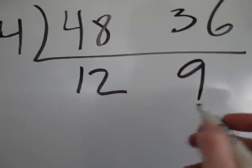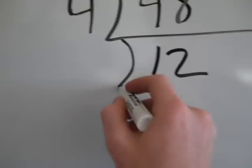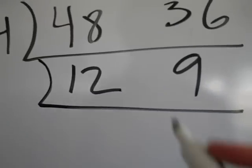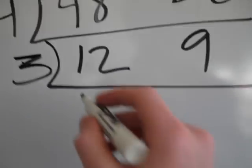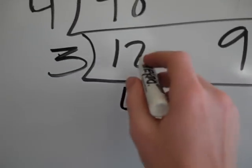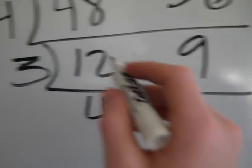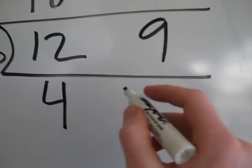Now I'm looking at 12 and 9, and I'm thinking about numbers that go into 12 and 9. 3 goes into both of these numbers. 3 goes into 12 four times, 12 divided by 3 is 4, and 9 divided by 3 is 3.